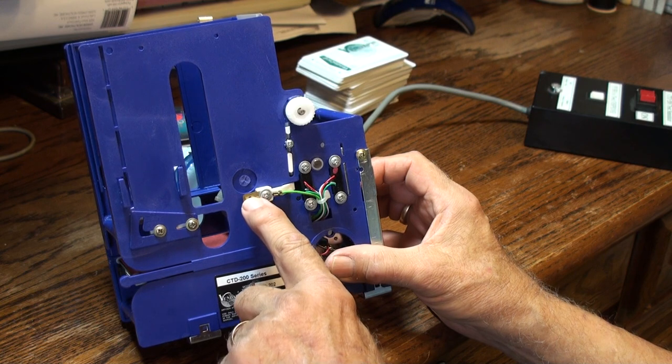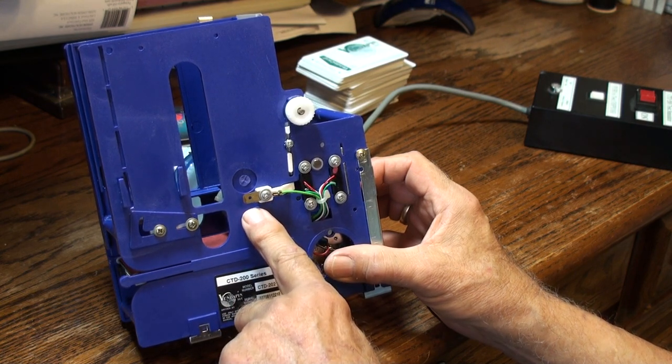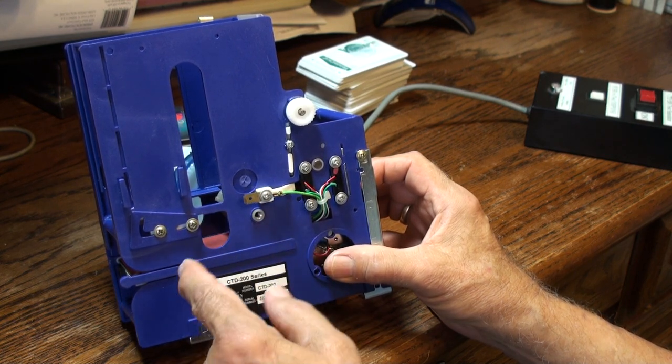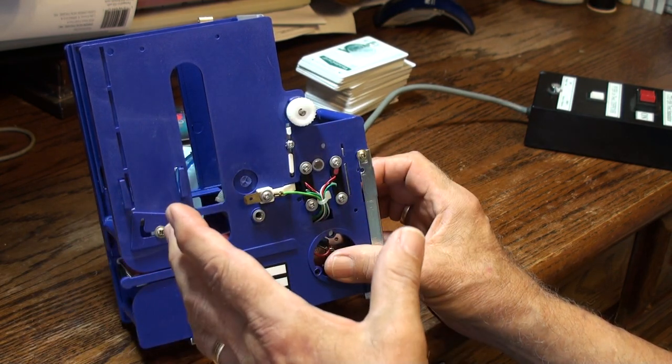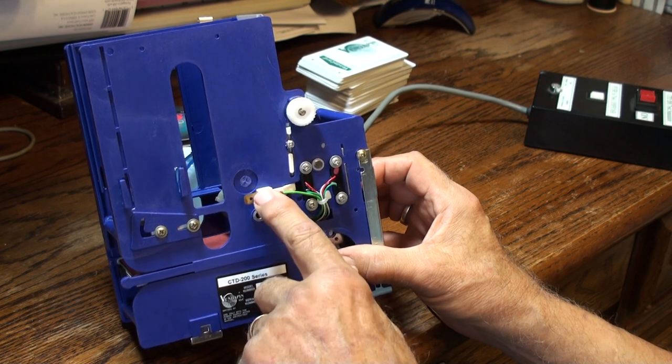There's a grounding screw right here. If you're in a high static area, you want to ground because when you're passing plastic over rubber, it builds up an electrostatic charge. So this is the grounding screw.